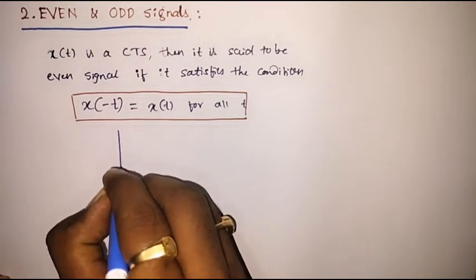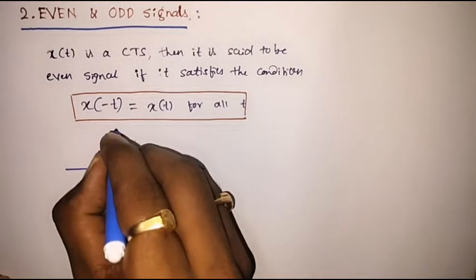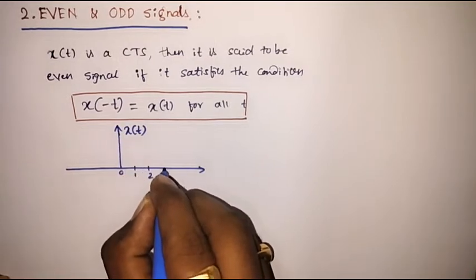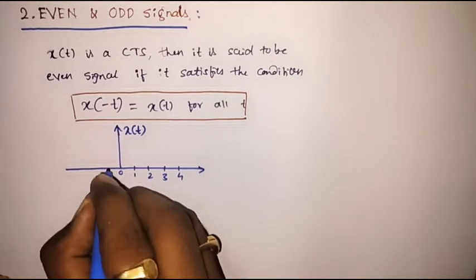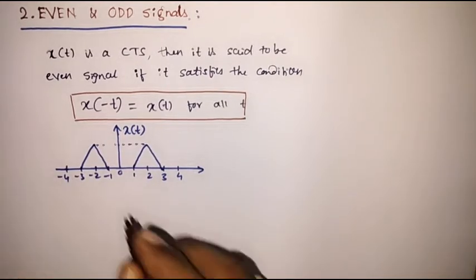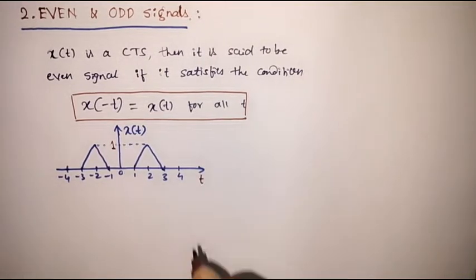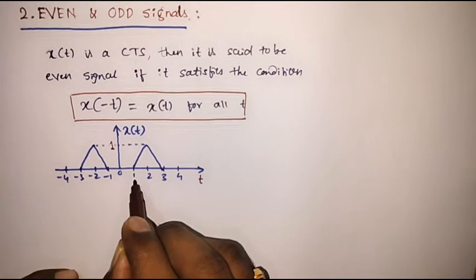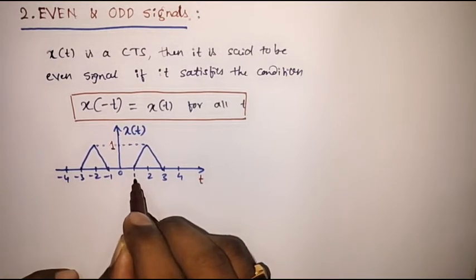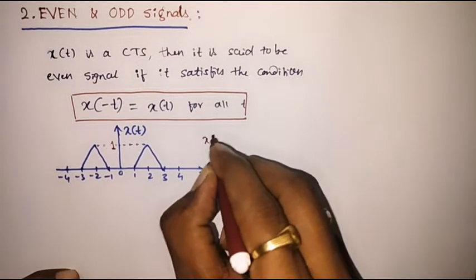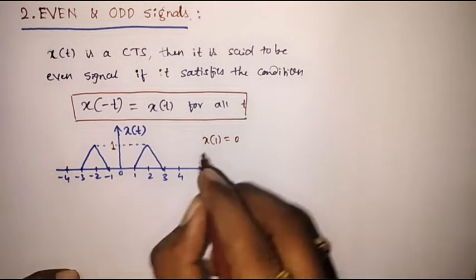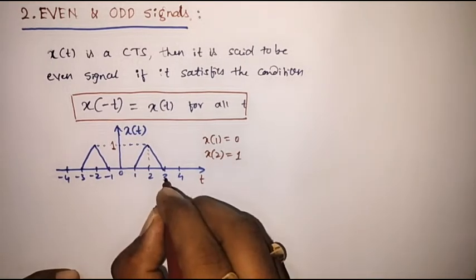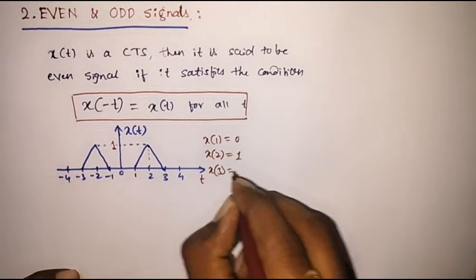For example, assume that this is x of t signal. Let the magnitude of the signal be 1, and this is the time axis. We can observe that the value of signal x of t at t equal to 1 is 0, that is x of 1 is equal to 0. At t equal to 2, x of 2 is equal to the amplitude, that is 1. And the value of x of t at t equal to 3 is 0.